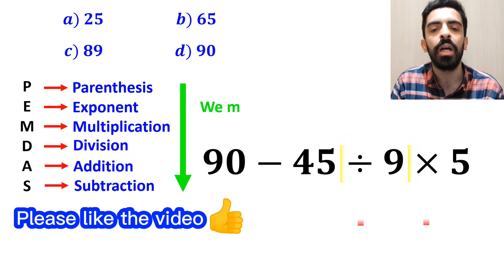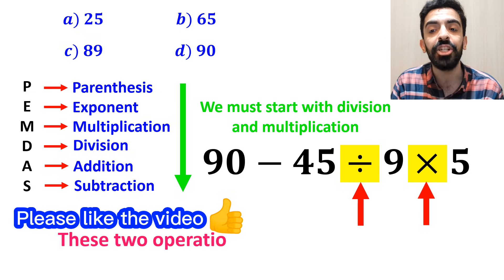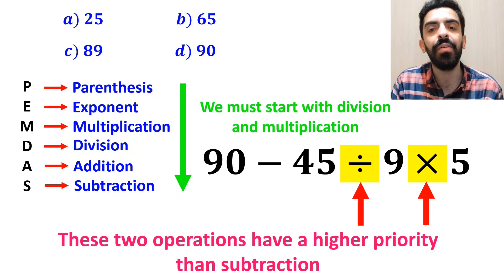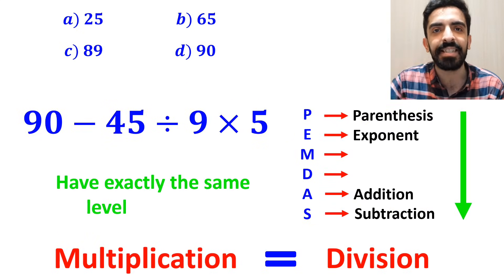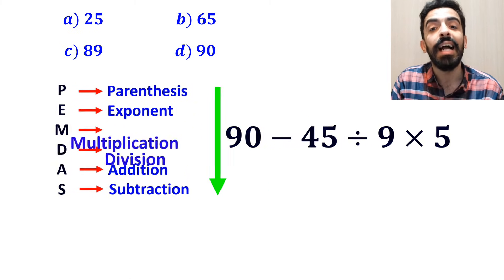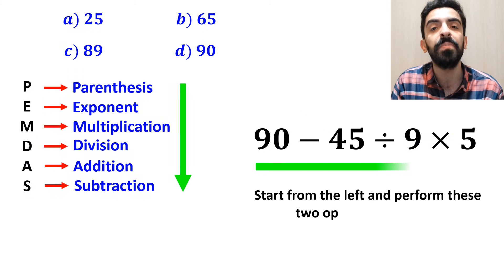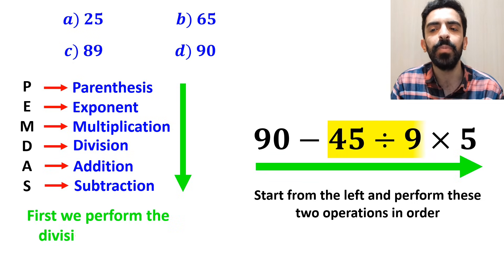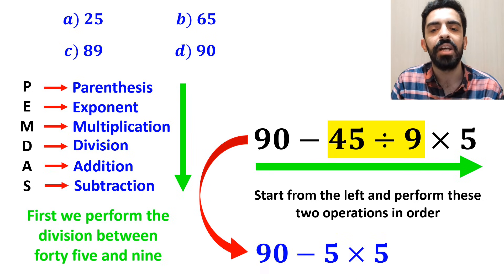According to the PEMDAS rule, we must start with the division and multiplication, because these two operations have a higher priority than subtraction. However, it's very important to keep in mind that multiplication and division have exactly the same level of priority. In this situation, the best approach is to start from the left and perform these two operations in order. So first we perform the division between 45 and 9, and instead of this expression, we can write 90 minus 5 then times 5.